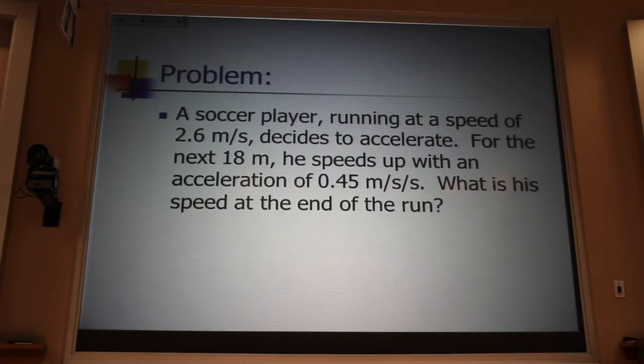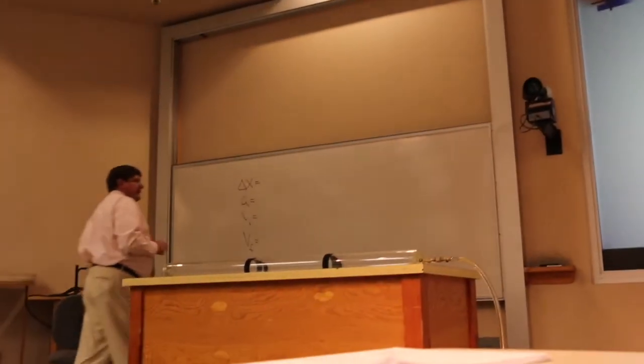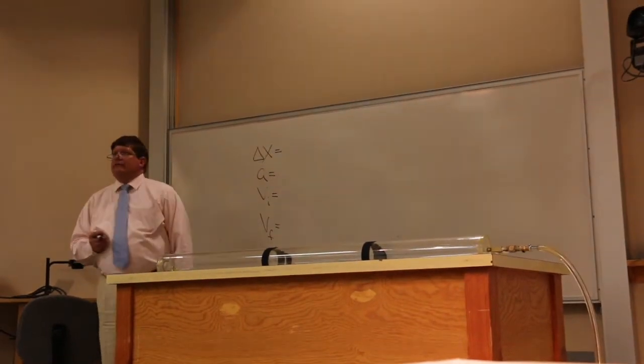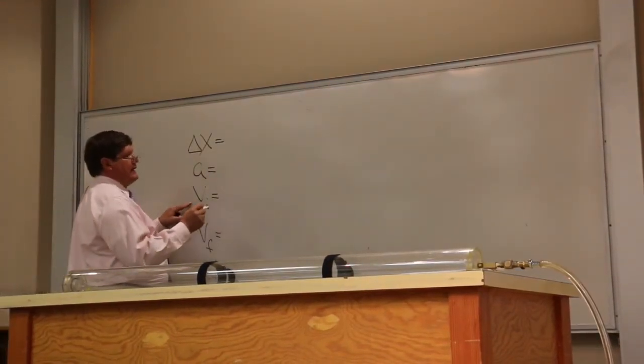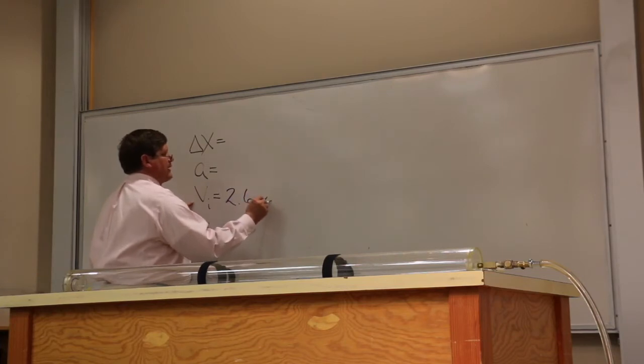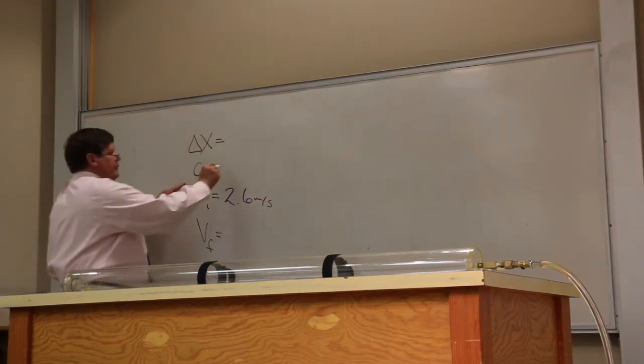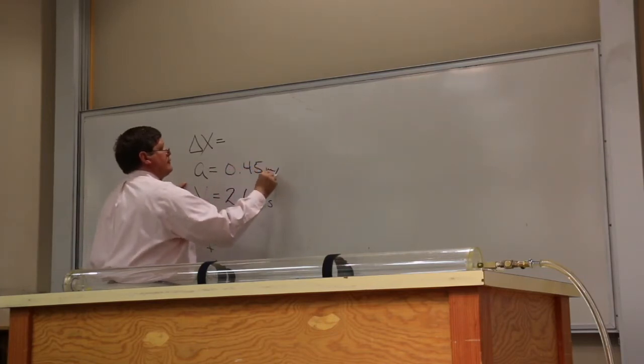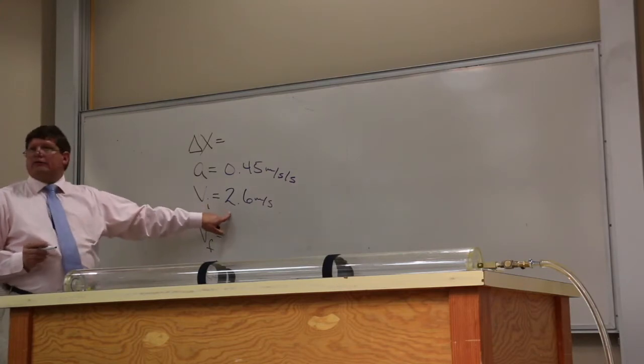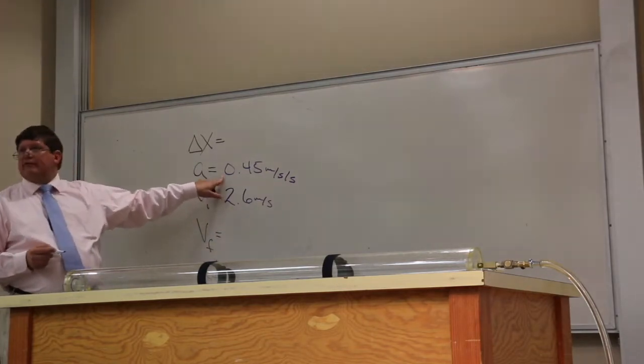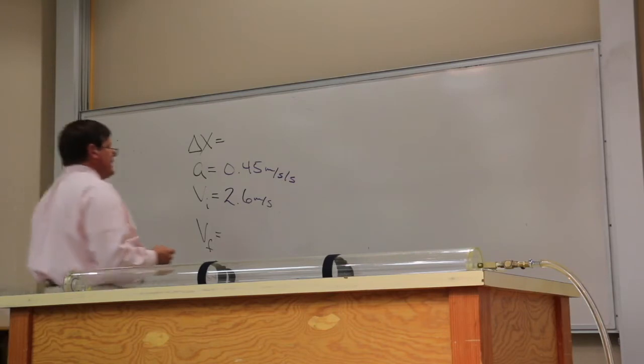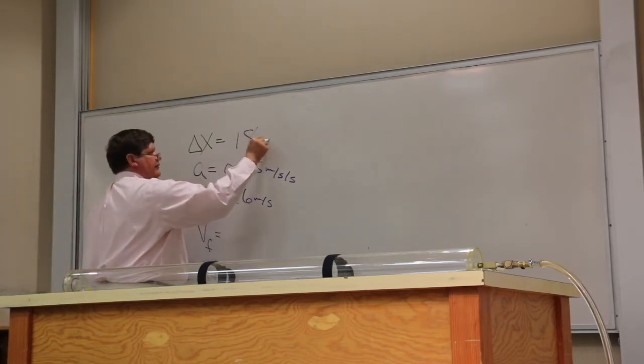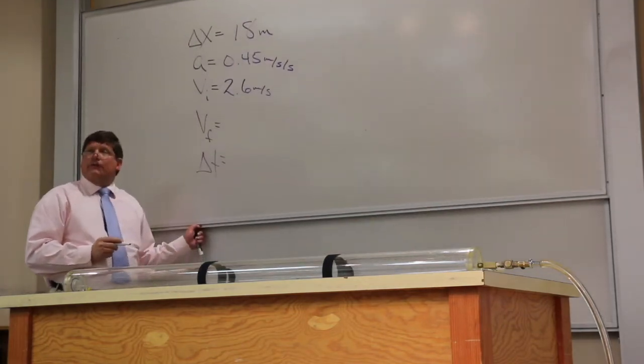Okay, let's work this one together to remind you. The first thing we do is turn off our brain. And then we just find three of these five variables from the problem statement. Well, originally, that soccer player is traveling at 2.6 meters per second. He then speeds up with an acceleration of 0.45 meters per second per second. And if I call this a positive velocity, in order to speed up, I have to have a positive acceleration. They have to be in the same direction. We are told that he has that acceleration for a distance of 18 meters.